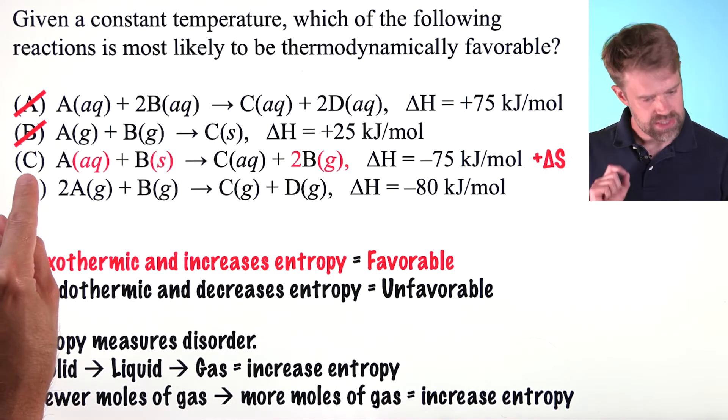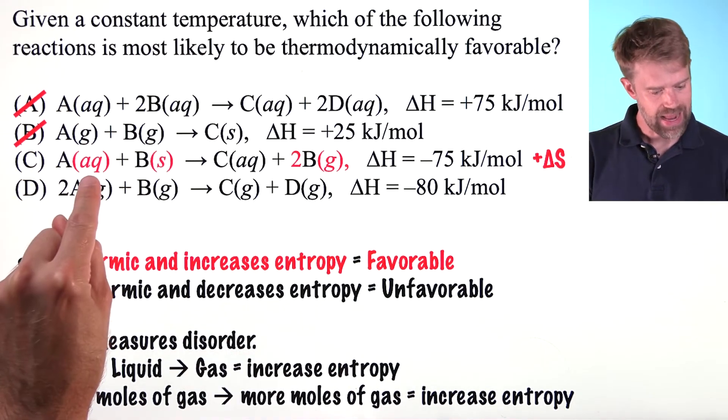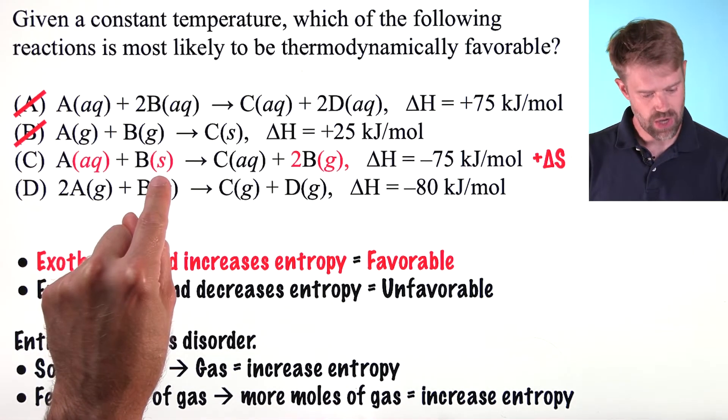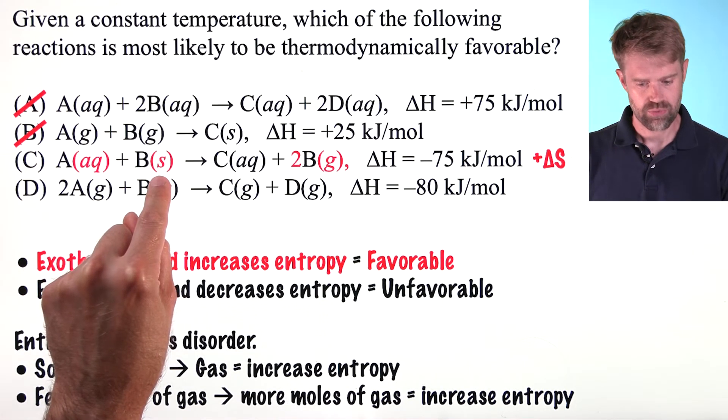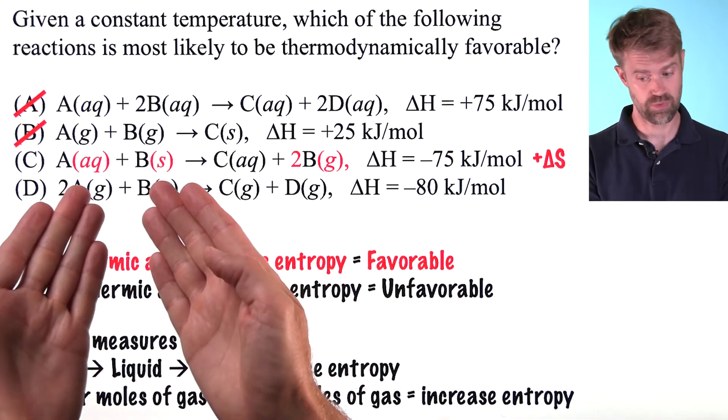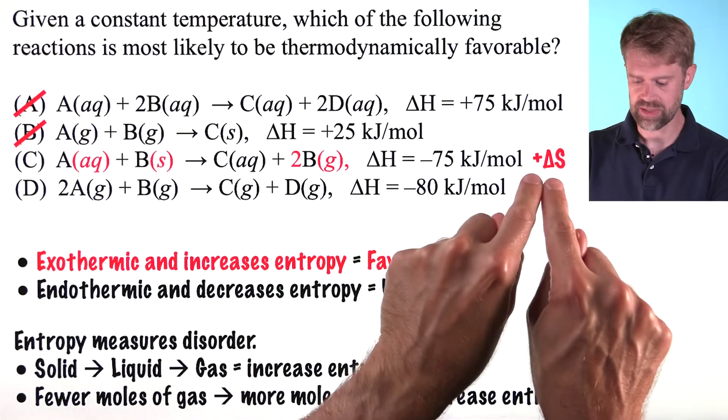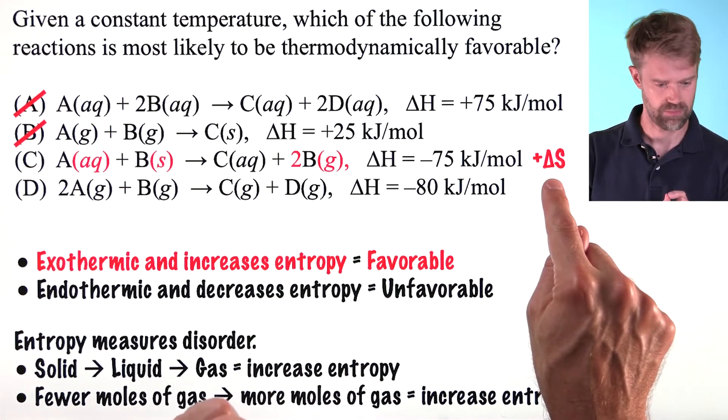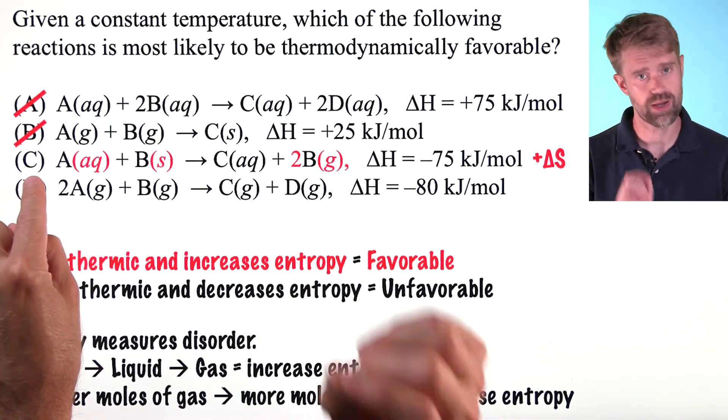In choice C, an aqueous reactant and a solid reactant produce two moles of gas. There was no gas before. That's definitely an increase in entropy. That's good and C is probably the correct answer. But let's check choice D just in case.